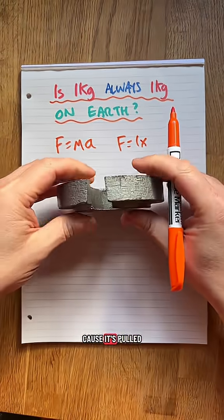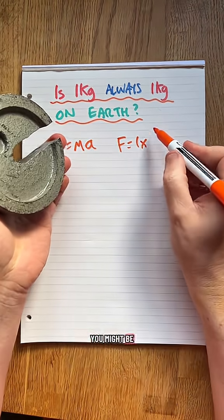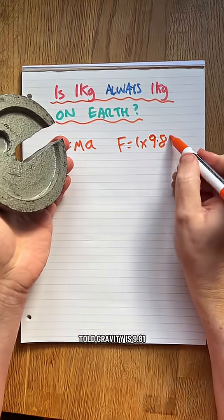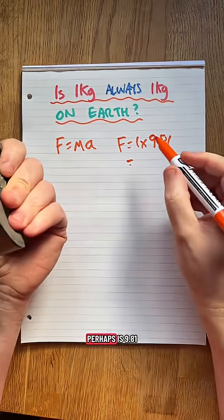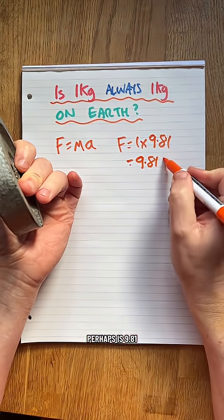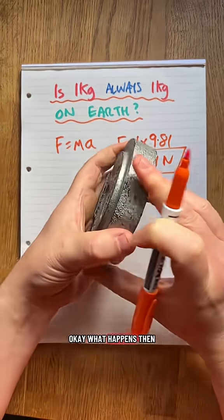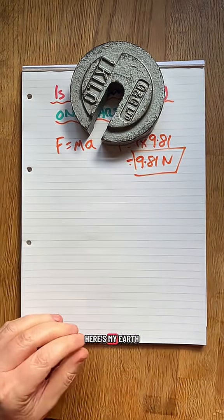Because it's pulled down by gravity, you might be told gravity is 9.81, so this one kilogram on Earth right here right now perhaps is 9.81 Newtons. That should be okay. What happens then? There's my Earth.